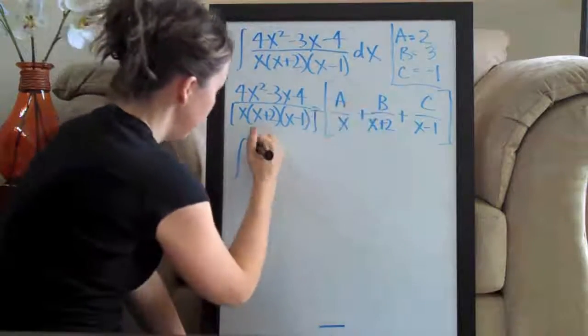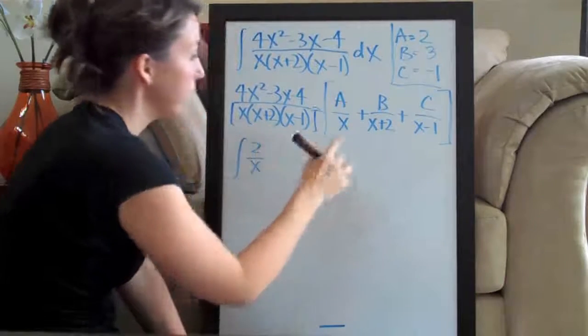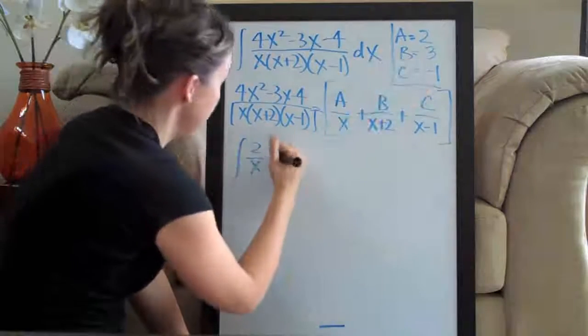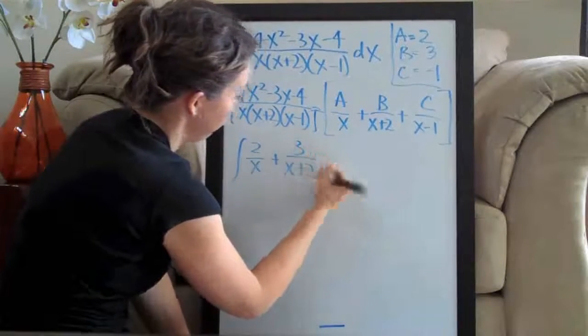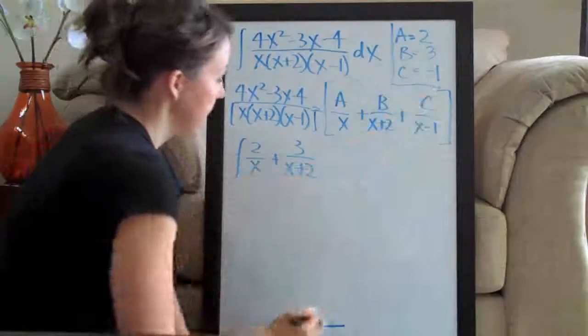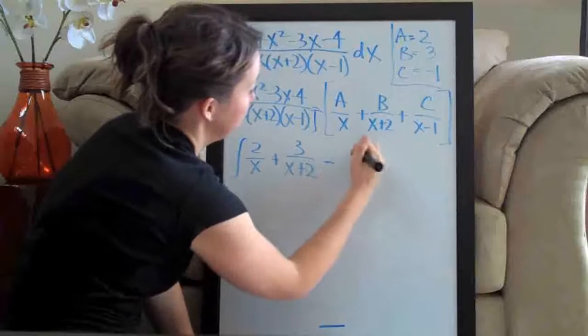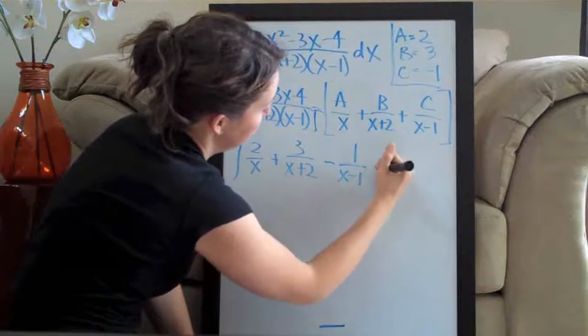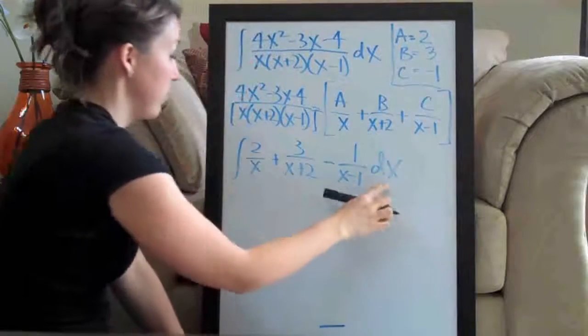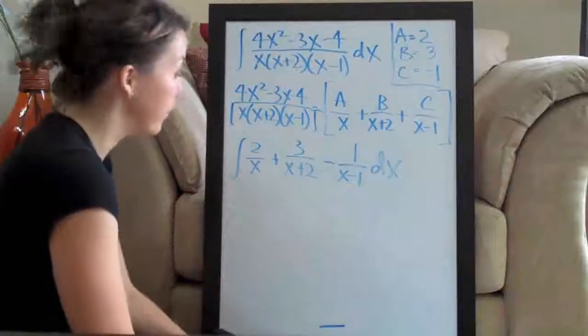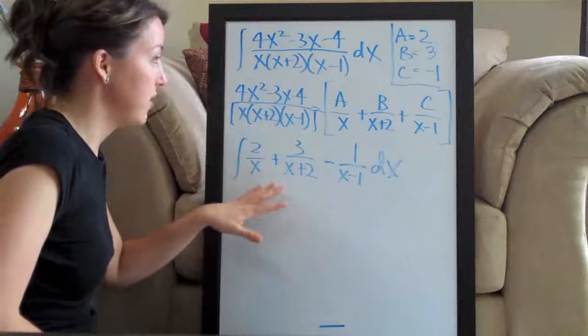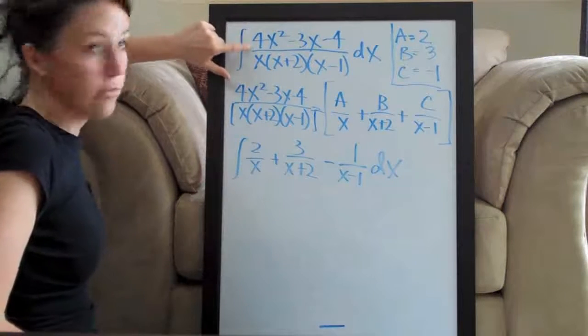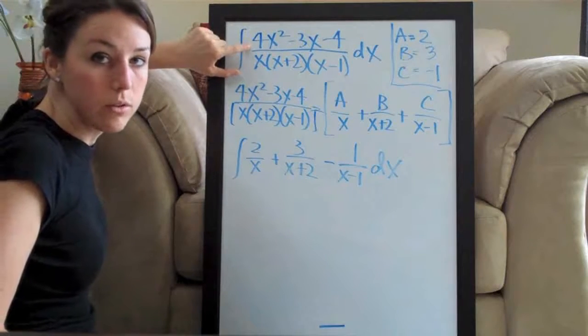So, we're going to have the integral of this with these numbers plugged back in. So, we said that a was 2. So, 2 over x. We said that b was 3. So, plus 3 over x plus 2. And we said that c was negative 1. So, we have minus 1 over x minus 1 and then dx, of course, is just notation that always goes with the integral here. So, now, finally, this is something that we can actually take the integral of as opposed to this which was just impossible to take the integral of.